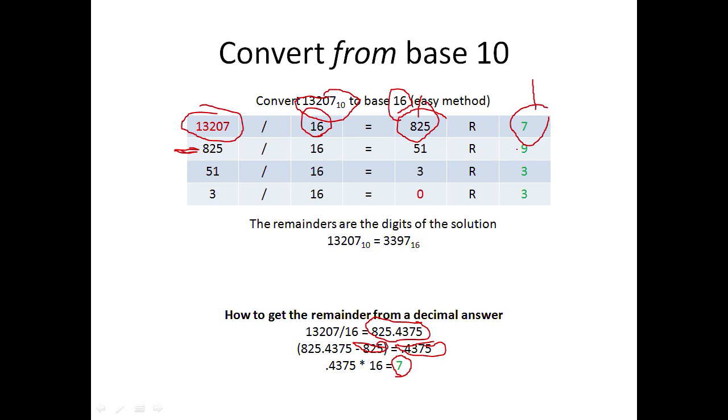825 divided by 16 equals 51 remainder 9. Then take 51, divide by 16, and keep doing this. Eventually you get 3 remainder 3. Since 3 is less than 16, when you divide 3 by 16 you get 0 remainder 3. When you notice the result is less than the base, you know you're done.